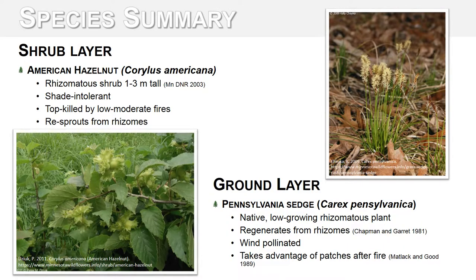A common and abundant shrub layer species found in this plant community is American hazelnut, or Corylus americana. It is a shade intolerant rhizomatous shrub growing 1 to 3 meters tall. This species is not fire resistant but can re-sprout post-fire from root rhizomes. The ground layer in dry jack pine forests is mostly composed of dry woodland shade intolerant species. Pennsylvania sedge, or Carex pennsylvanica, is a low growing rhizomatous plant that takes advantage of bare ground post fire and also regenerates from rhizomes.